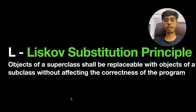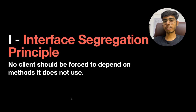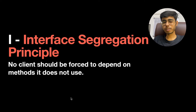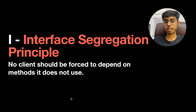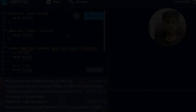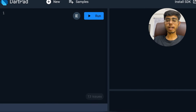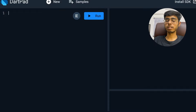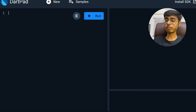Now let's understand the I principle — Interface Segregation Principle. It states that no client should be forced to depend on methods it does not use. A class should only implement those interfaces that it can fulfill — it should not implement any extra interface.